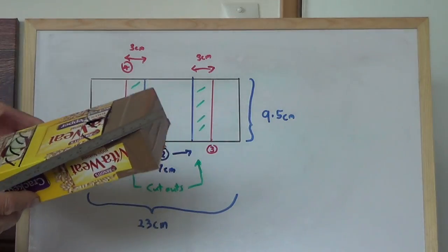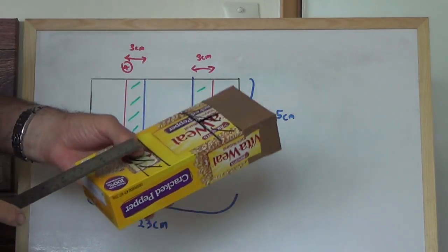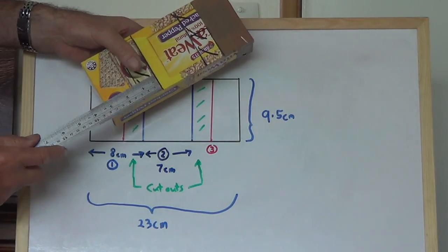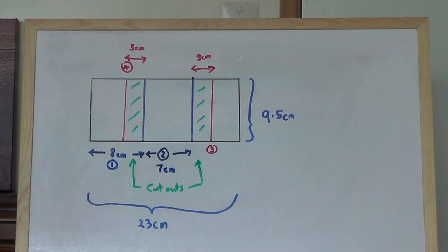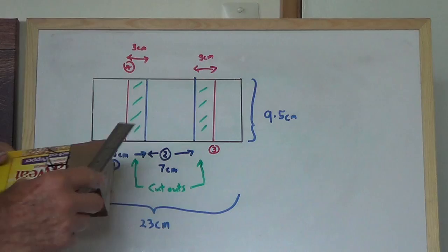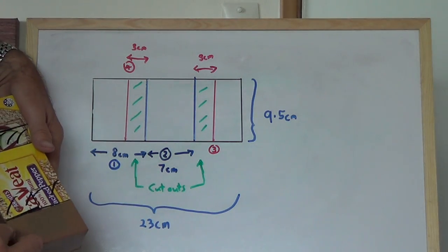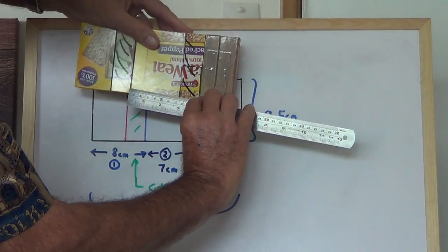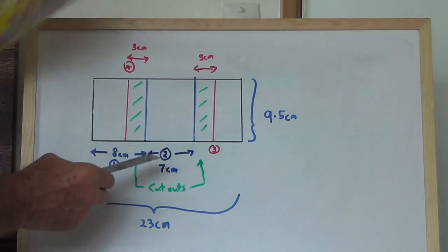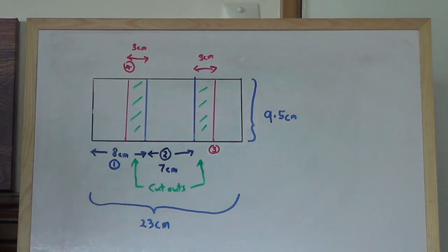Now what I first do is I measure from there to there. So that distance across from there to there is 8cm. And then I measure from that mark to that one from there to there which is 7. Now that's the critical distance. 7cm.